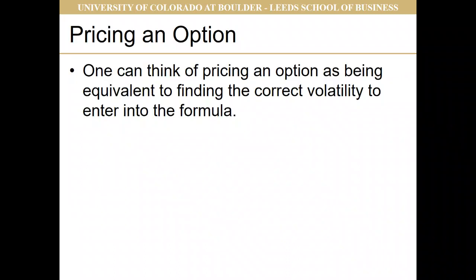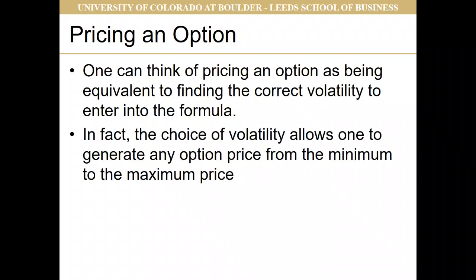One can think of pricing an option as being equivalent to finding the correct volatility to enter into this formula. In fact, the choice of volatility allows one to generate any option price from the minimum to the maximum. If you go back to our option properties section, you'll find the minimum and maximum prices for a European call. A volatility very close to zero gives the minimum price, and a very high volatility gives the maximum price.